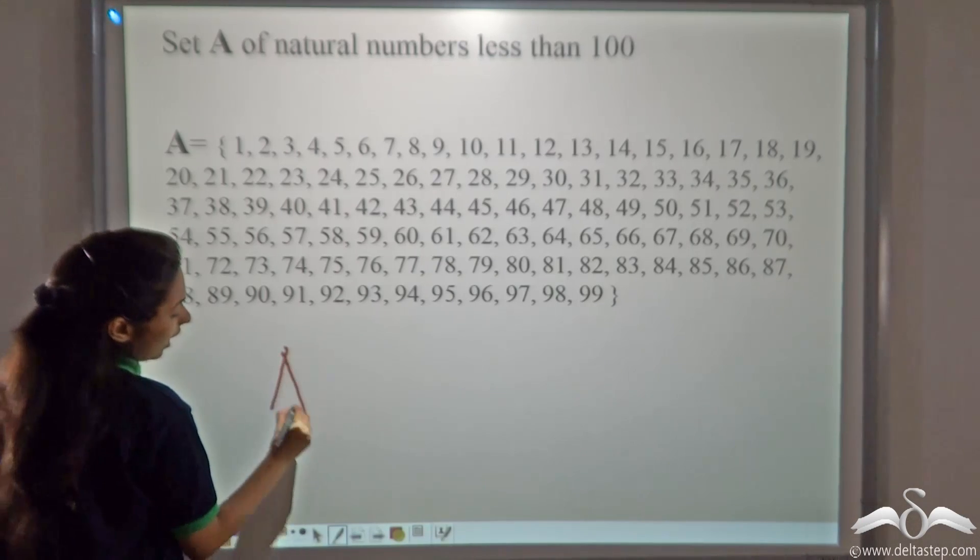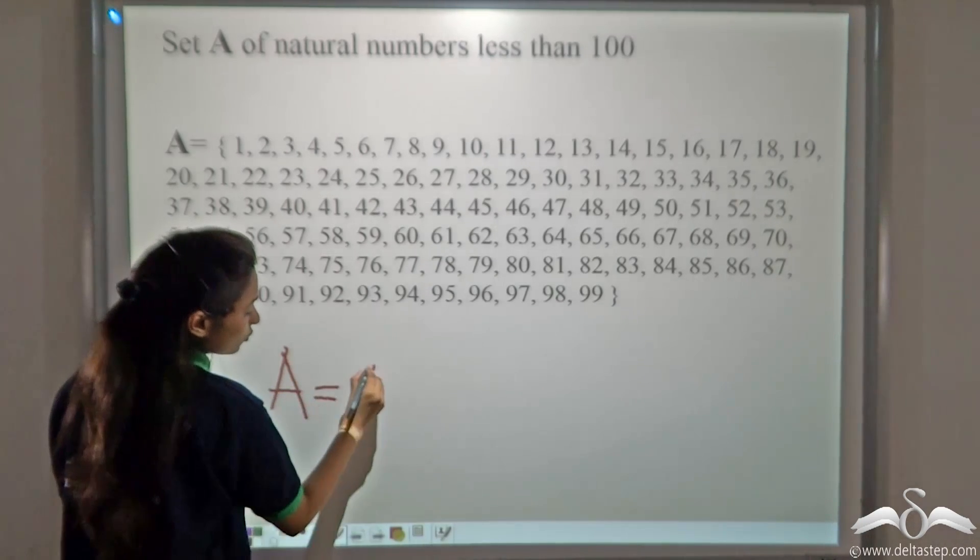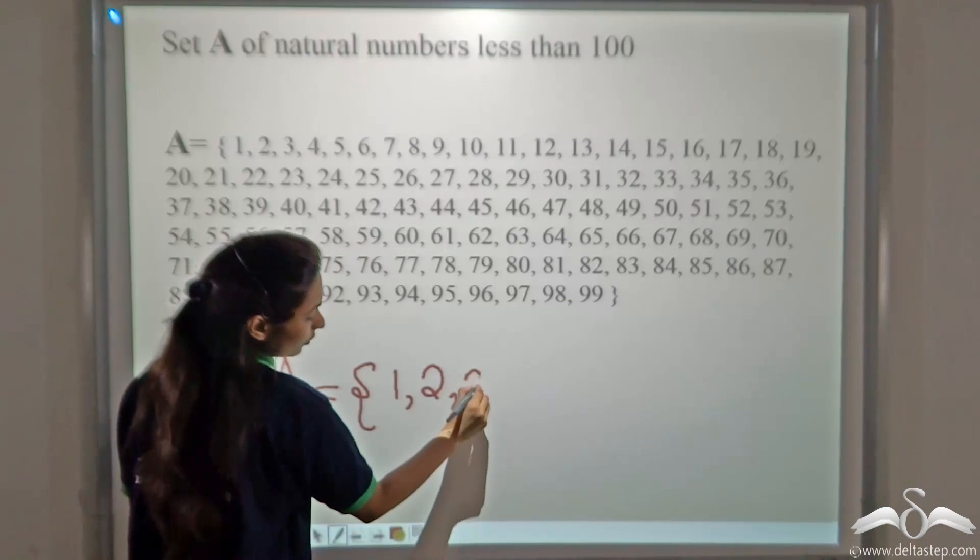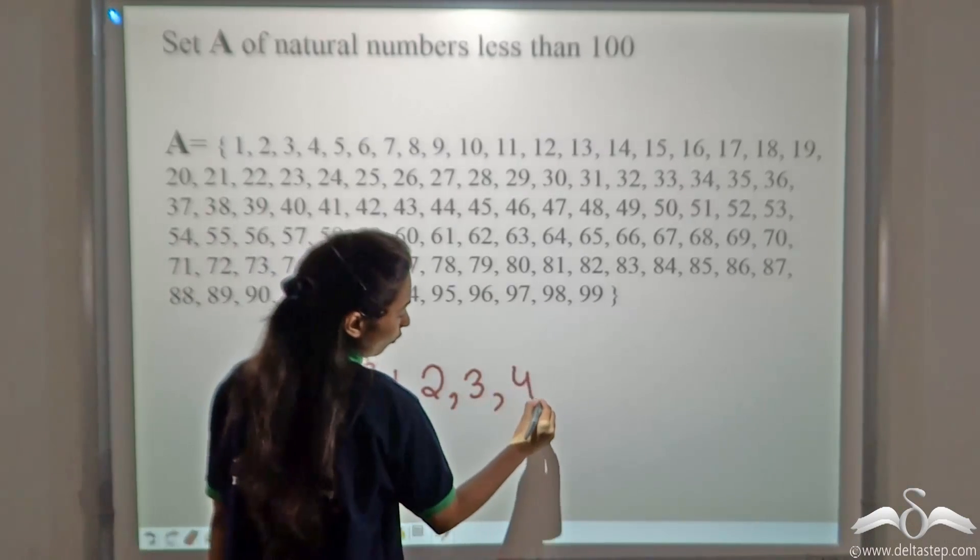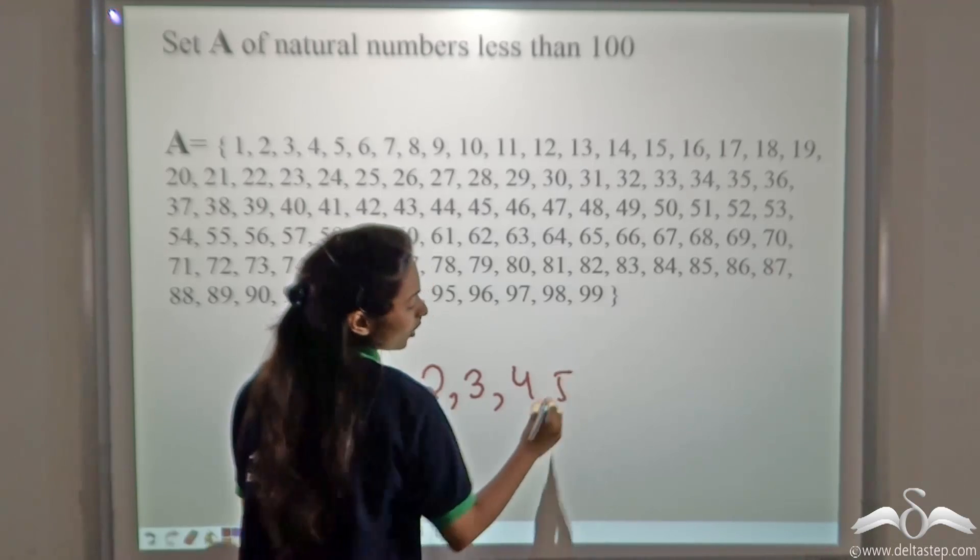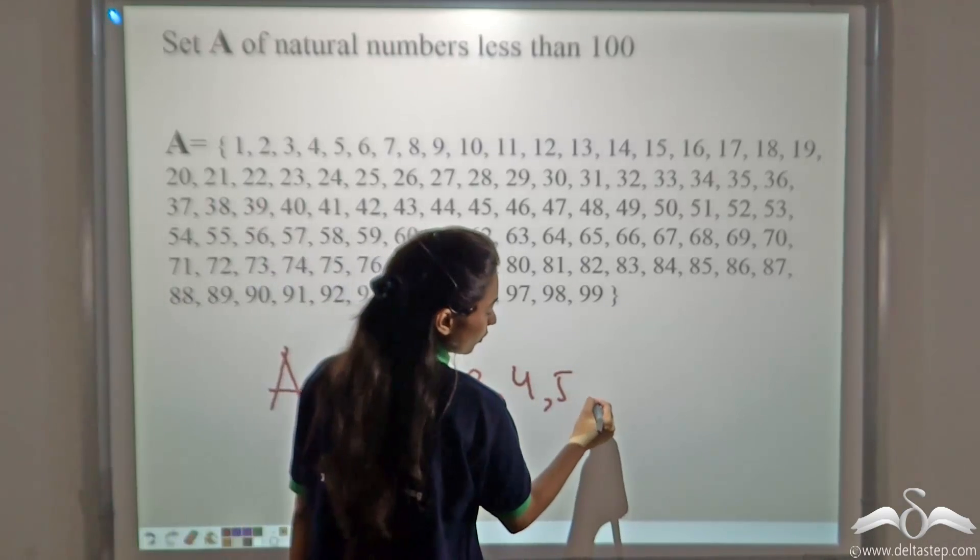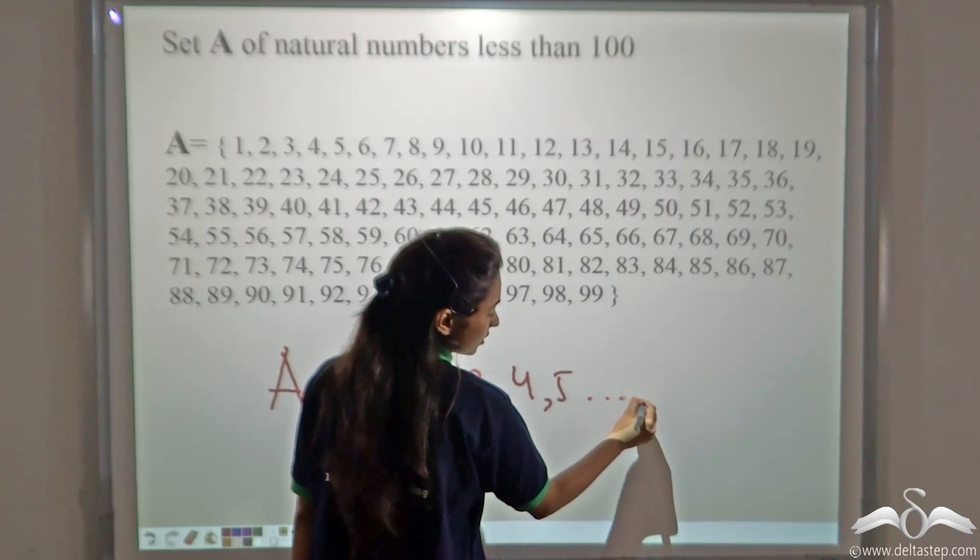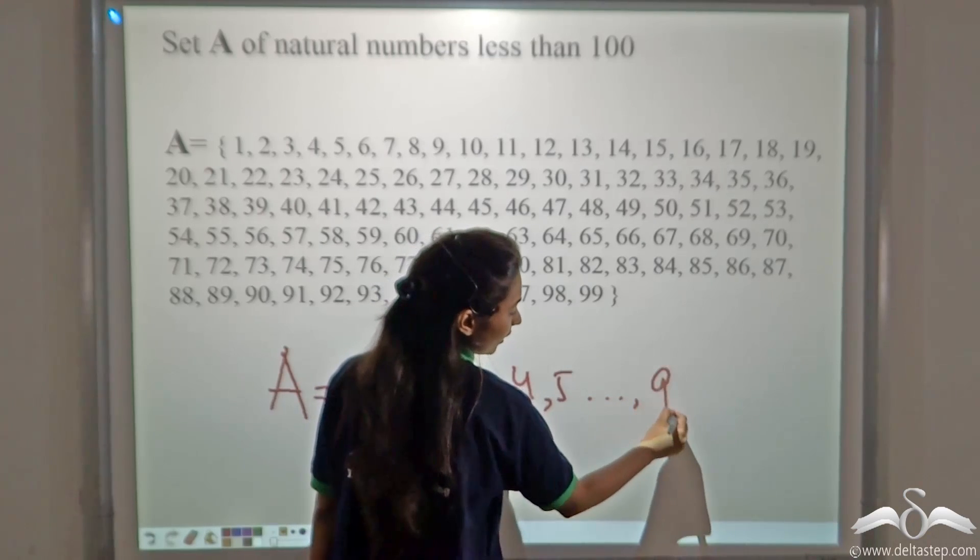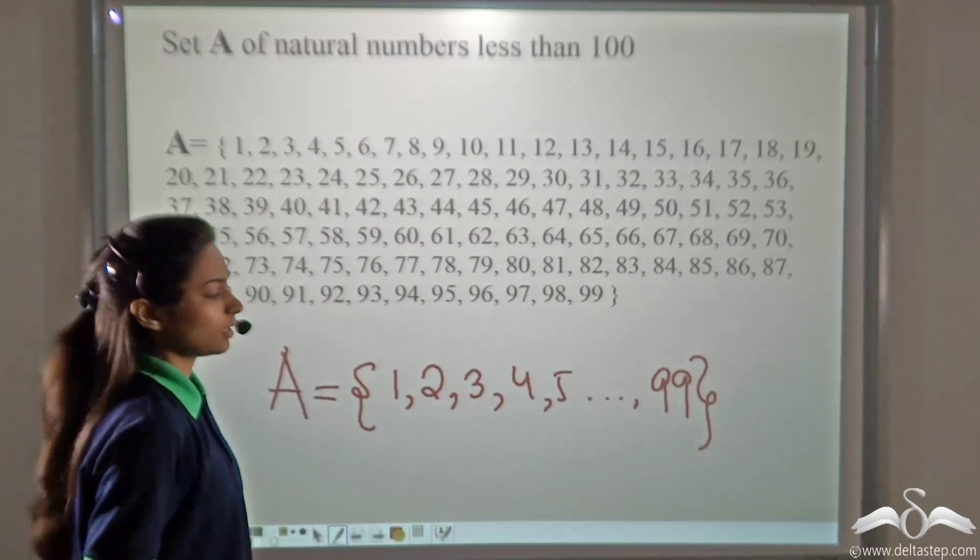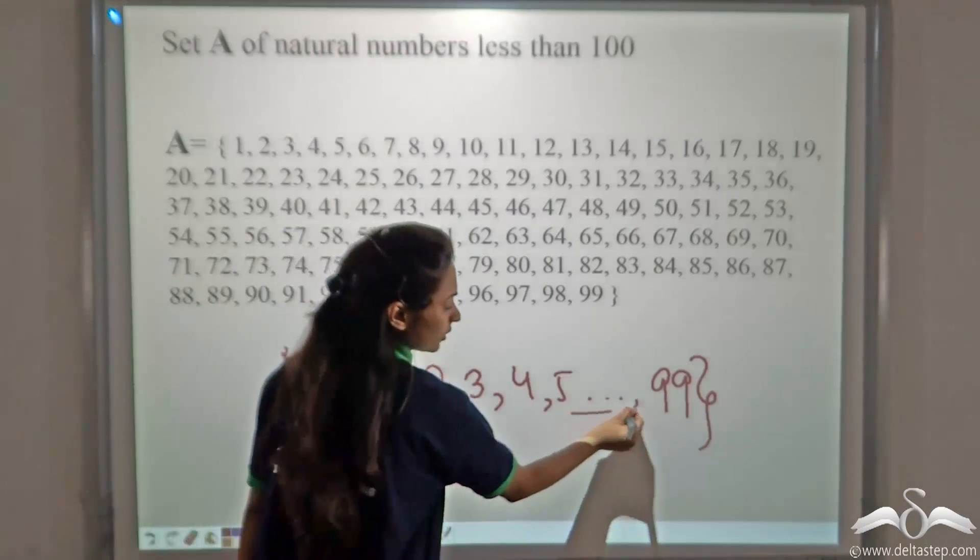We can write it as A is equal to 1, 2, 3, 4, 5. You don't have to write all the numbers till 99. What you can do is use three dots, put a comma and write 99. This will complete your answer. But, how? What are these dots?